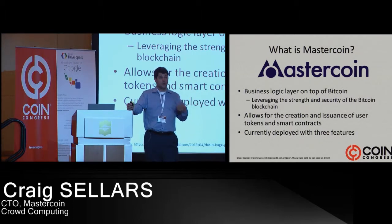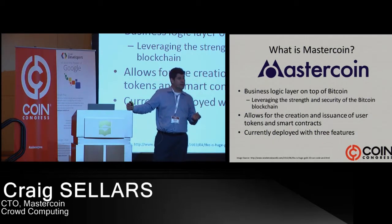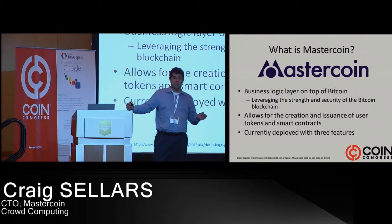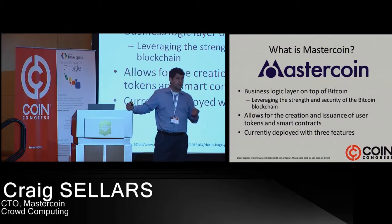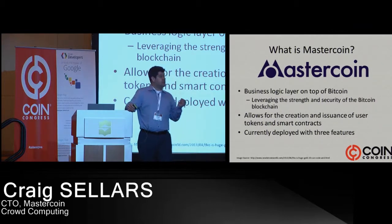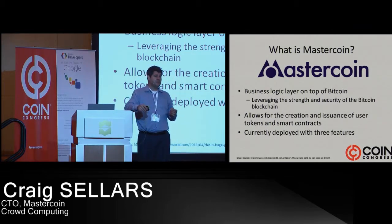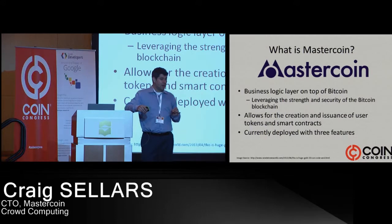Mt. Gox is an example. You are trusting this intermediary to hold your funds and exchange your fiat for Bitcoin, or Bitcoin for fiat, or Bitcoins for altcoins, etc. With the decentralized exchange using the Master Protocol, it was, in essence, the first smart contract, because what it allowed you to do is create an order book.